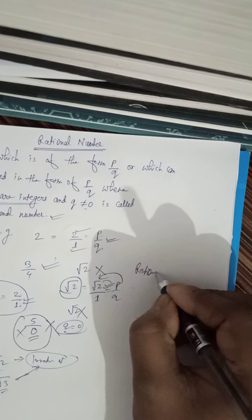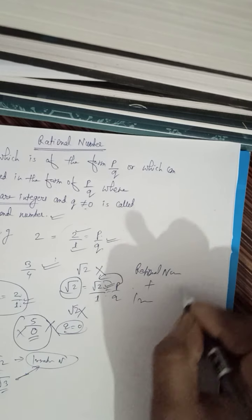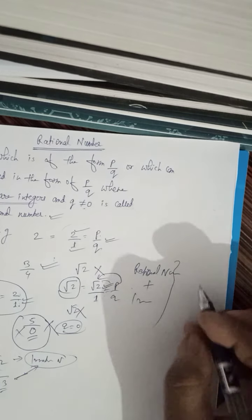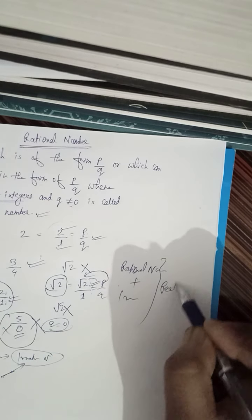Rational numbers and irrational numbers together are called real numbers.